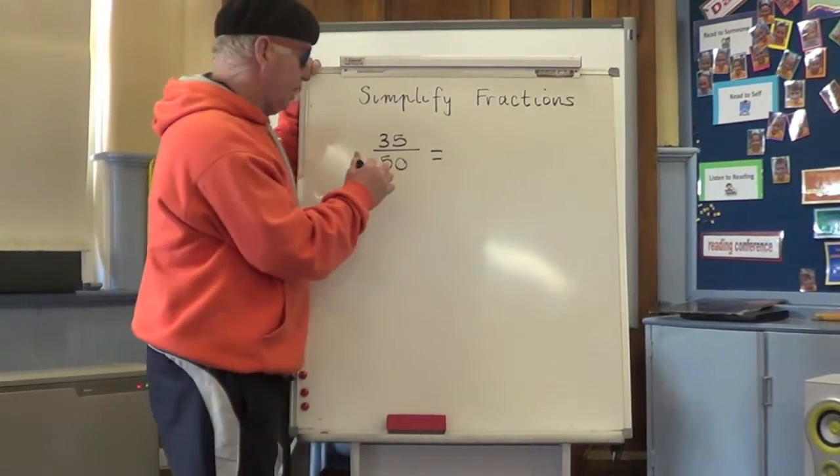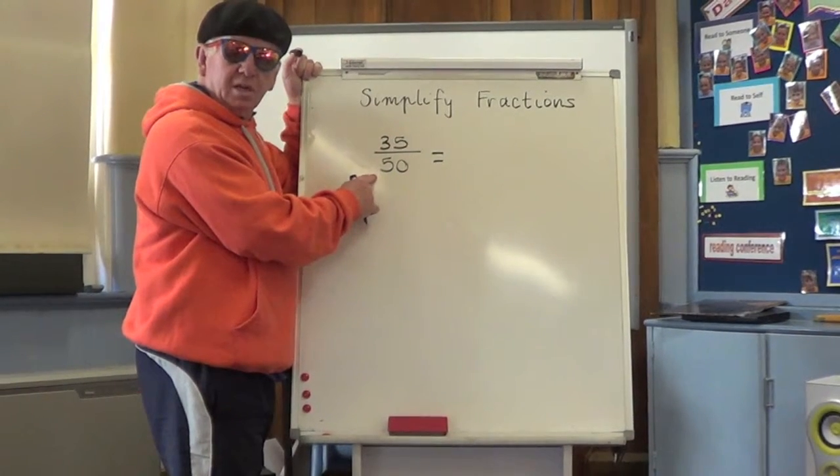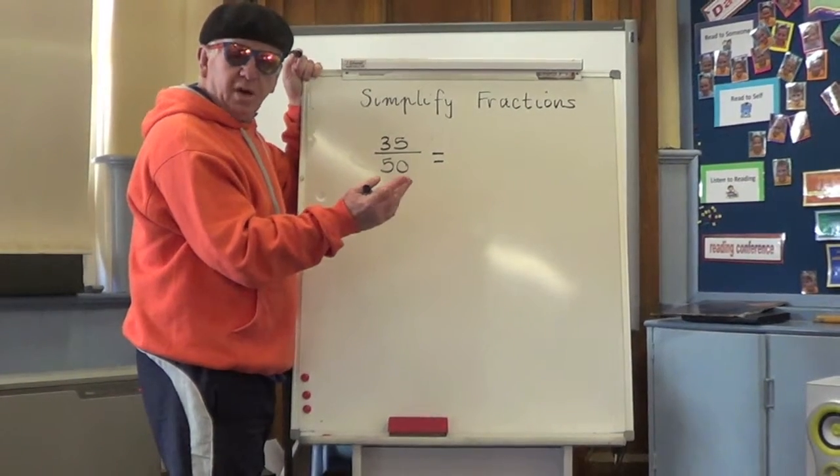So what we need to do is see, with equivalent fractions, what goes into both thirty-five and fifty. Did you say five? Let's try five.